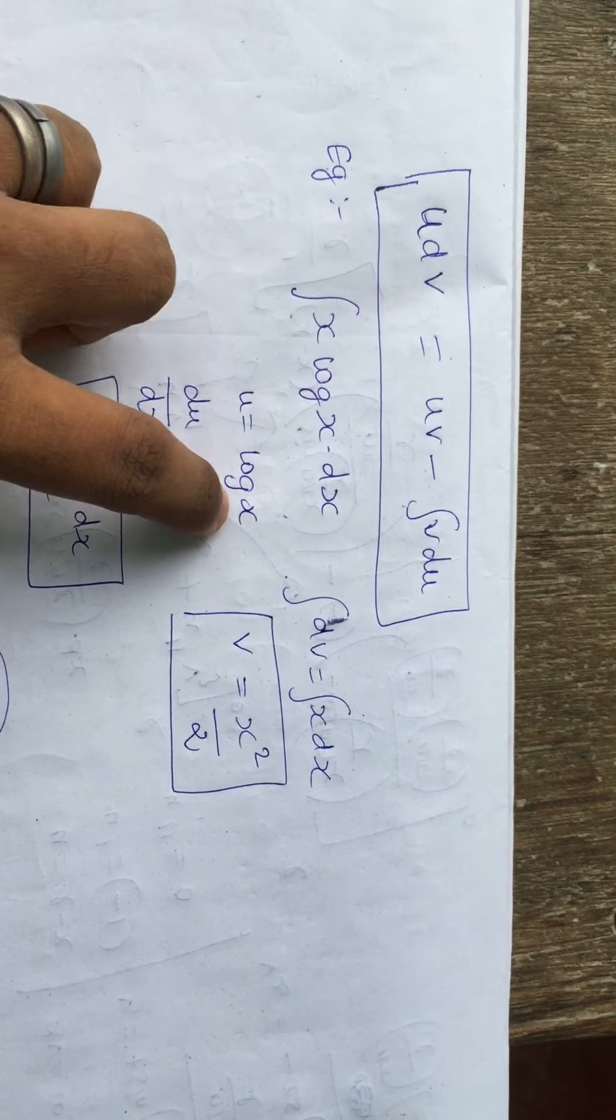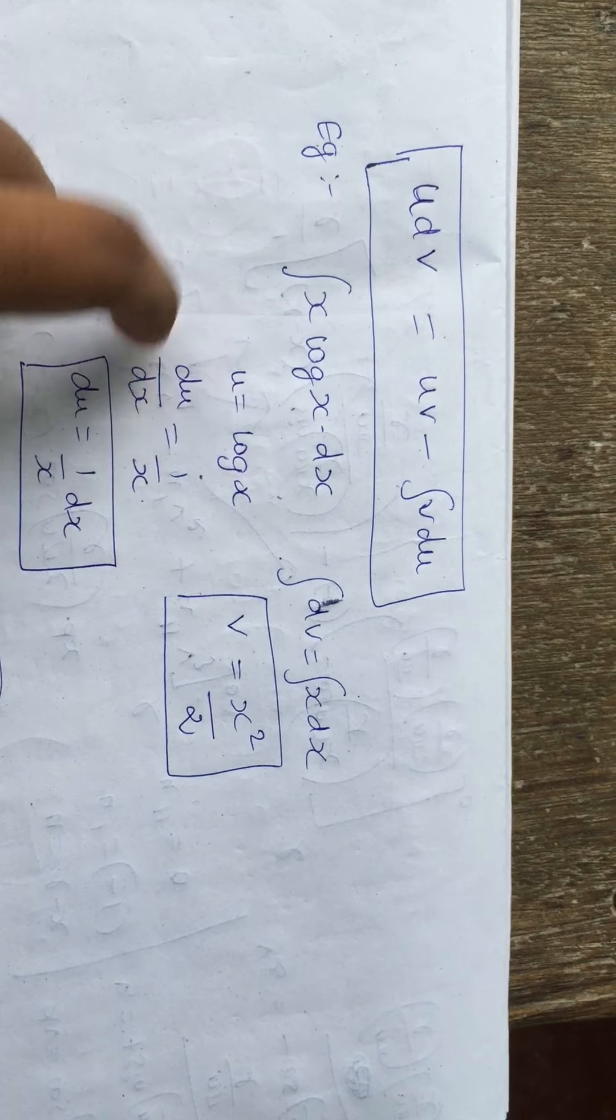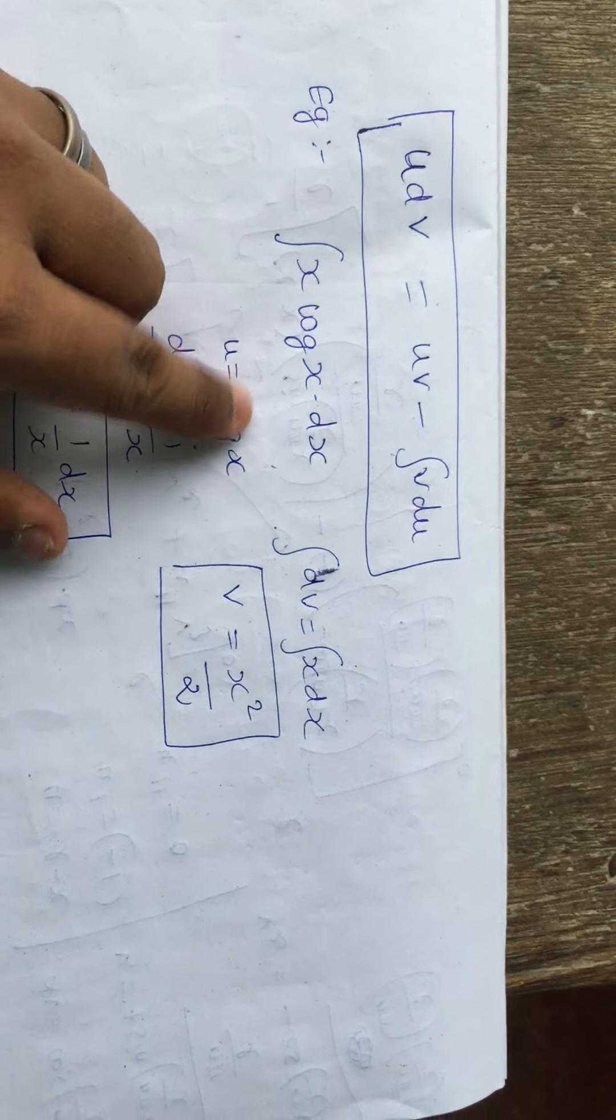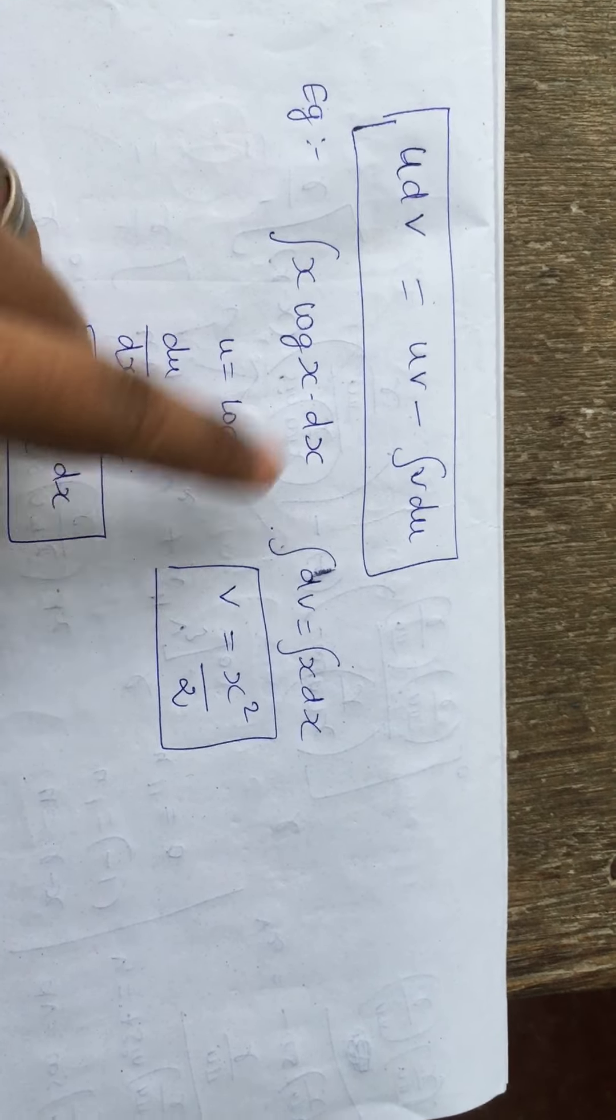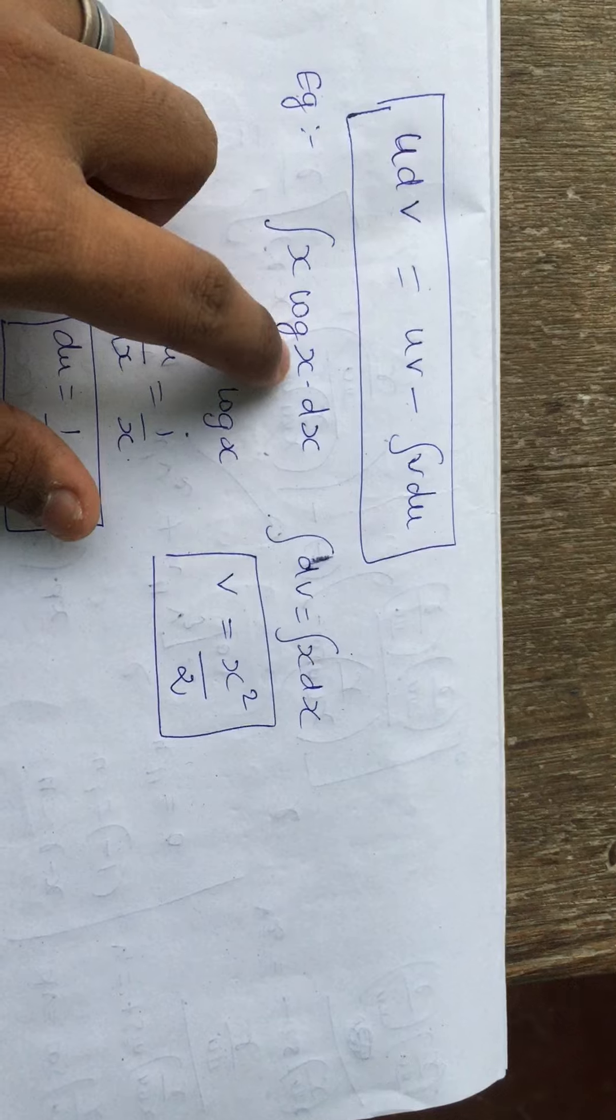If I take u equal to log x, I differentiate this term. Du by dx, differentiate with respect to x. The derivative of log x is 1 by x.